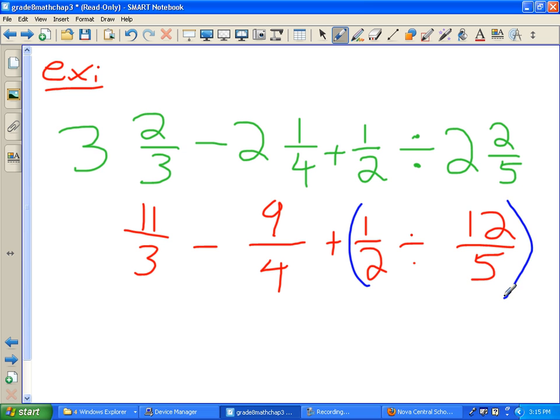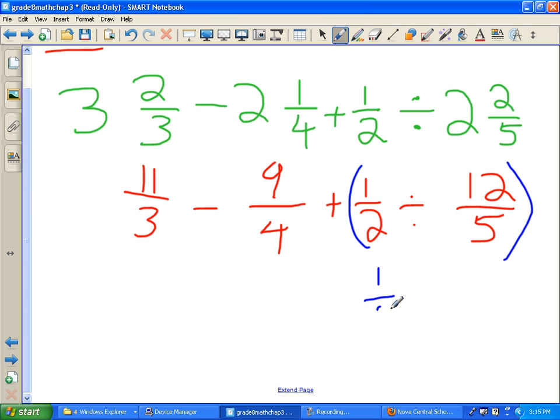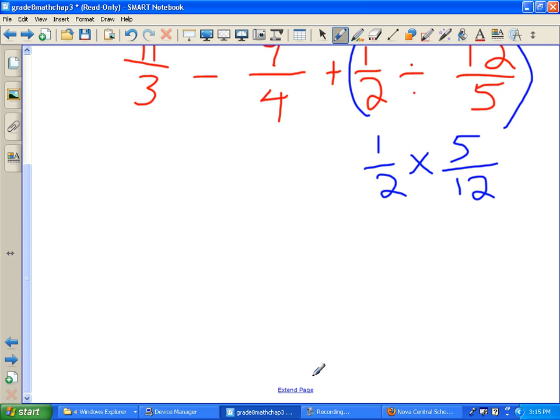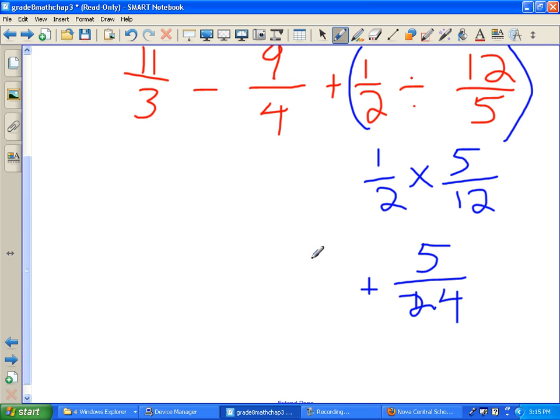And we always do the division before addition and subtraction. So 1 half, and we're going to multiply it by 5 over 2, because we flip it over. We don't really do division. There's nothing here that we can actually cross-simplify. So our answer, 1 times 5 is 5. 2 times 12 is 24. So this all became 5 over 24. Let's put the rest of our fractions back into it. And there we go.